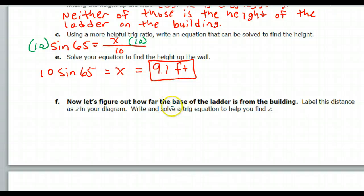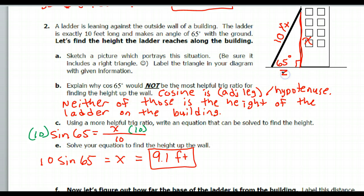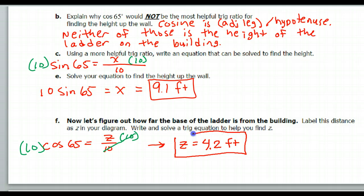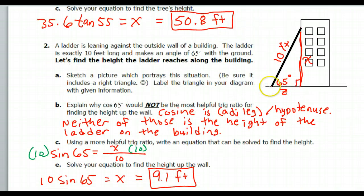Now let's figure out how far the base of the ladder is from the building. Write and solve a trig equation to help you find that. So we're supposed to call that z. There's my z. That's the adjacent leg, so I would use cosine now. Cosine 65 is z over 10. Multiplying by 10 on both sides, these tens are going to cancel out. So z is equal to 4.2 feet. That's how far the base of the ladder is from the building.